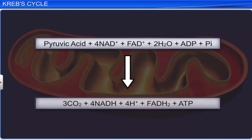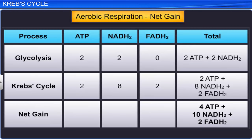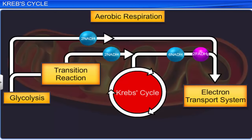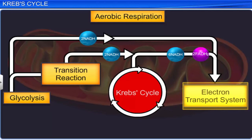The net gain of Krebs cycle in the conversion of two molecules of pyruvate is two molecules of ATP, eight molecules of NADH+ H+, and two molecules of FADH2. So far, the energy harvested has resulted in the direct synthesis of only four molecules of ATP. Further generation of energy as part of aerobic respiration takes place in the electron transport system or ETS.